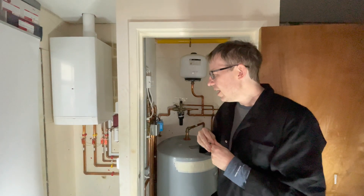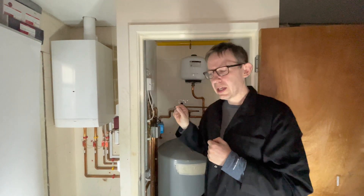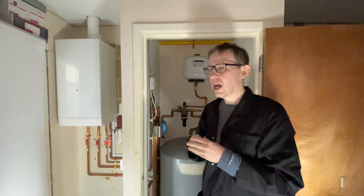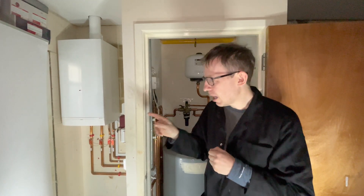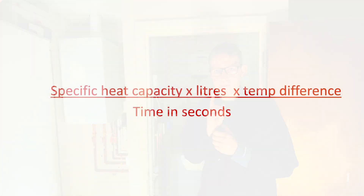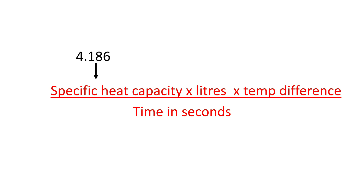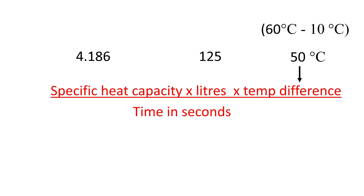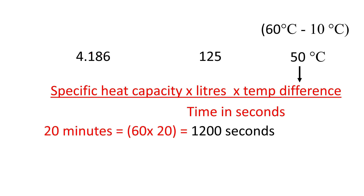Time for another calculation. If the boiler is to be used only for heating up the hot water, I am going to teach you how to work out the power output required. Specific heat capacity: 4.186. The storage capacity of the cylinder this time is 125 litres. Temperature difference: 10 degrees cold, thermostat set to 60, so 50 degrees. And 20 minutes in seconds is 1200 seconds.